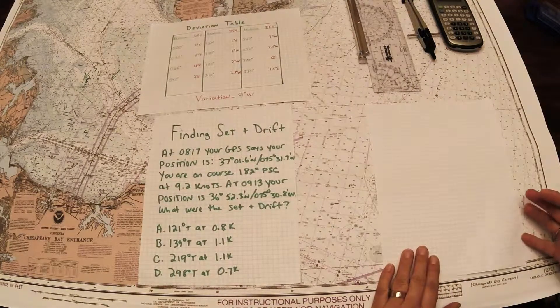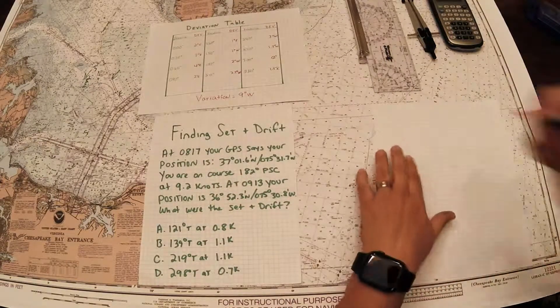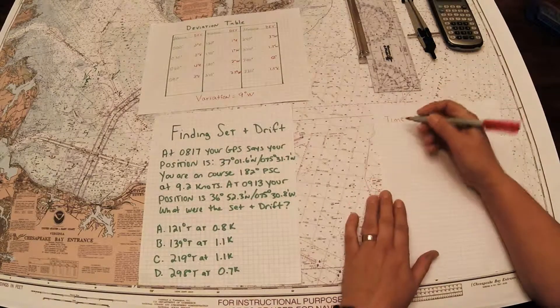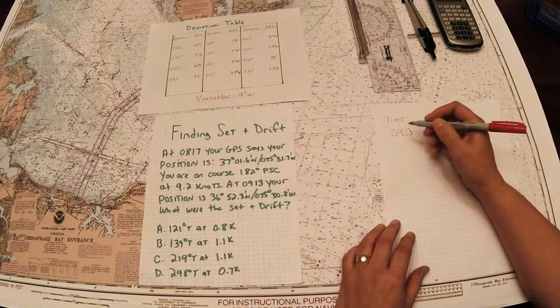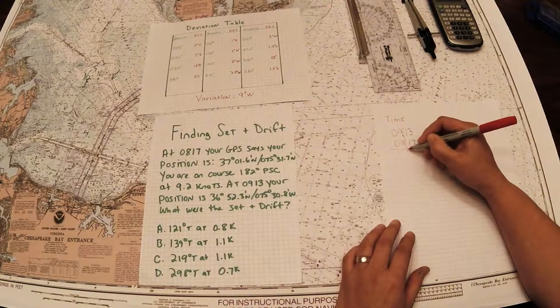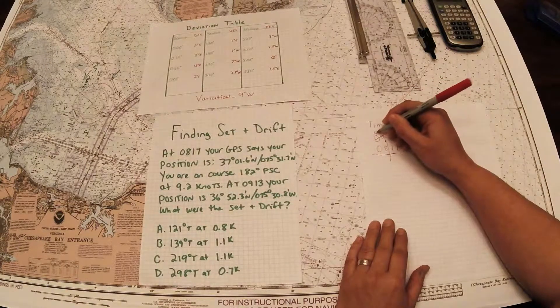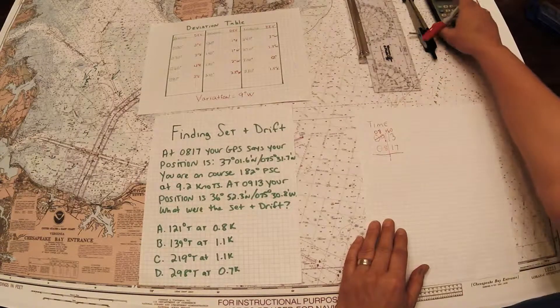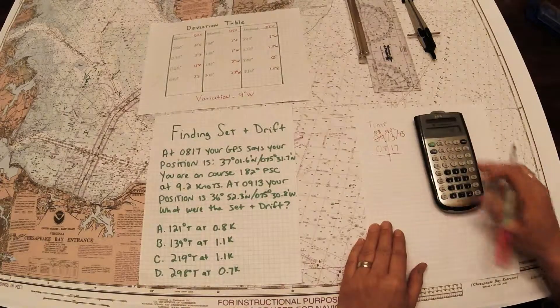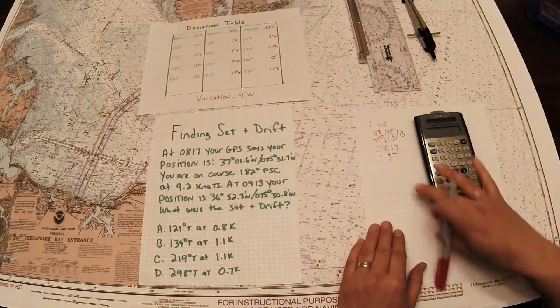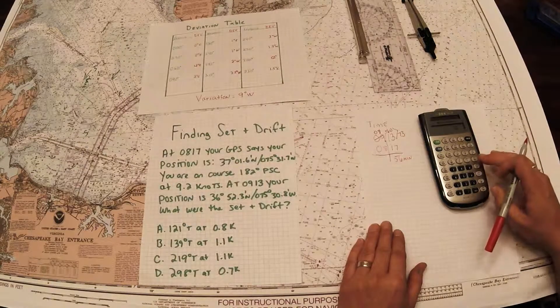The first thing I'm going to do is figure out the time difference and my true course. For time, remember we're going to put the later time, the arrival time, on top. So we've got 0913 and we left at 0817. I can't take 17 from 13, so I've got to borrow an hour, which makes that 8 and plus 60, so 60 plus 13 makes that 73. Now I can take 17 from that: 73 minus 17 equals 56 minutes. I'm going to make that a decimal because I know I'm going to need that later for my DST triangle: 56 divided by 60 equals 0.933 of an hour.